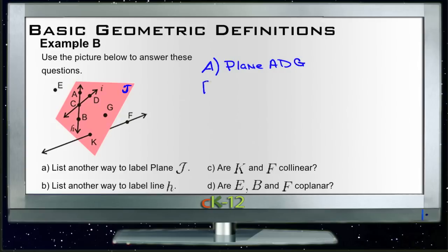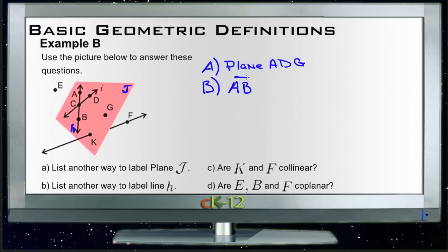For question B, it says: list another way to label line H. Line H is identified with a lowercase h, but the other way to identify a line would be any two points on the line. So we could identify this line as line A, B.